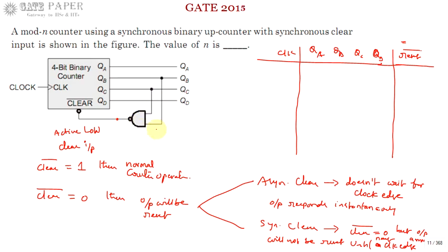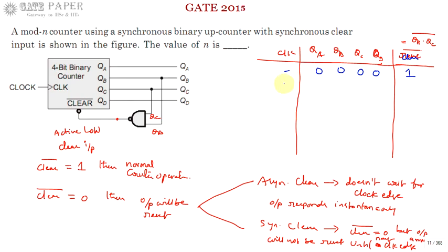Reset bar is the NAND operation of QB and QC — that is, reset bar = (QB · QC) bar. Whenever the counter is reset, outputs are 0000 and reset bar is 1. Clear bar equals 1 means normal operation: for every clock pulse, the counter is incremented by one. This is the MSB and this is the LSB.